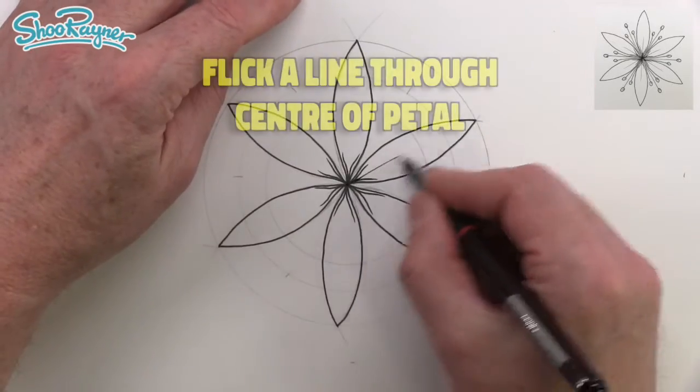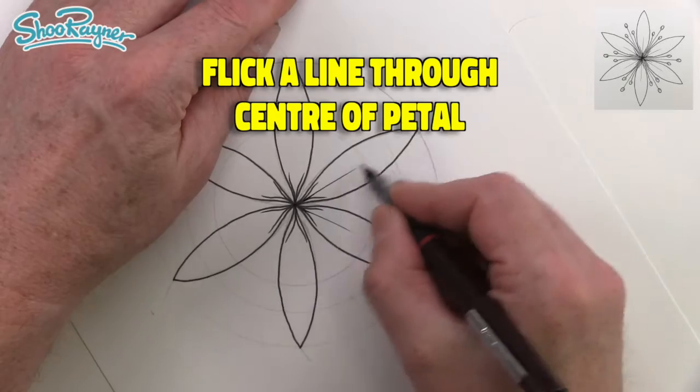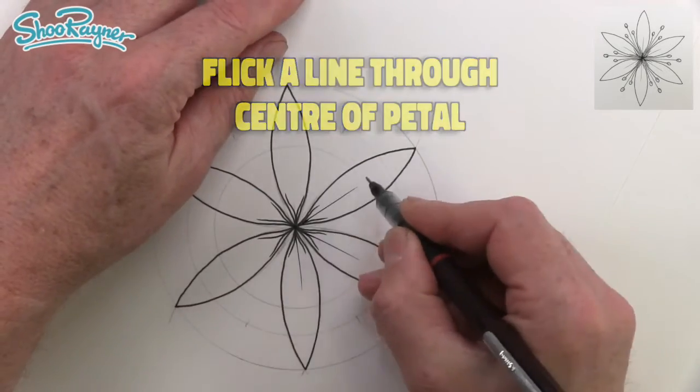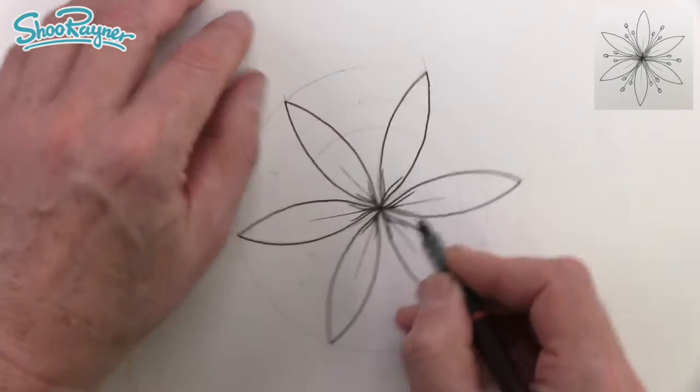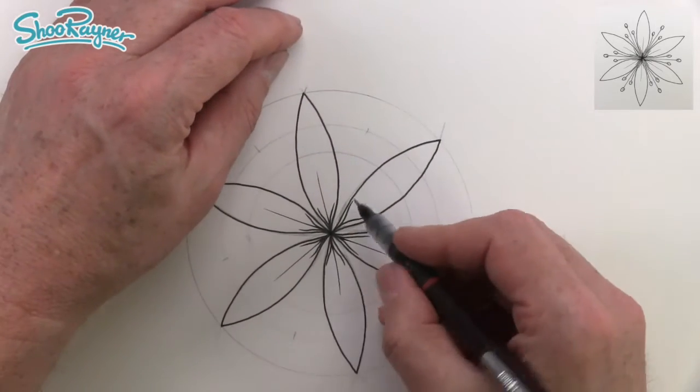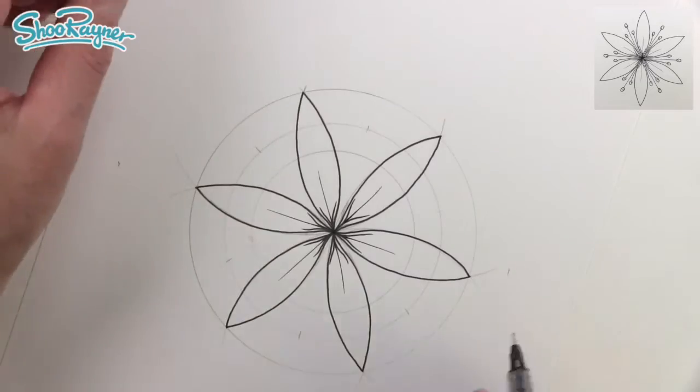And then we want to flick a line straight out down the middle. By flicking it you get a nice sort of pointy, it sort of thins, the line gets thinner at the end like that.